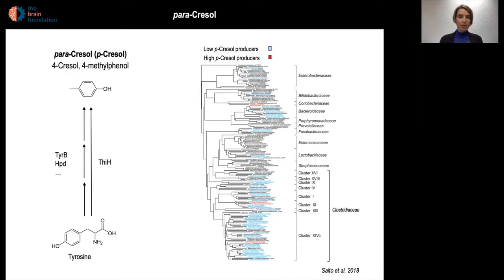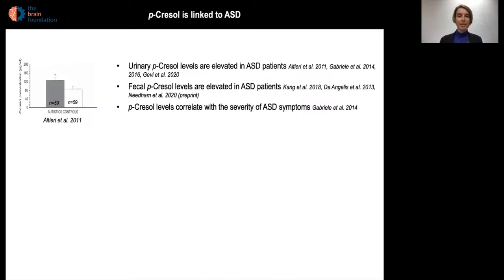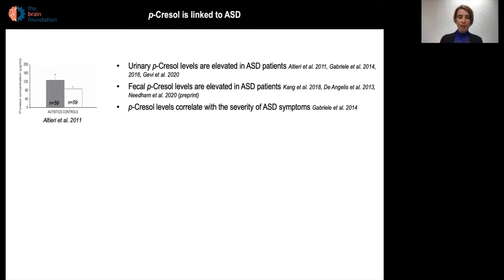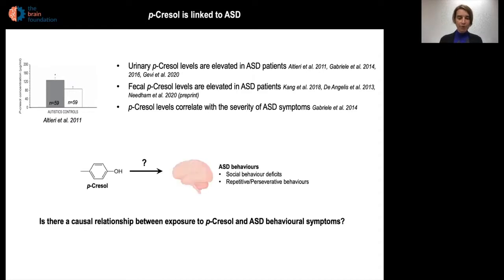We are interested in paracresol because it has been linked in the literature to ASD. Several papers have shown that urinary levels of p-cresol are elevated in ASD patients, as well as their fecal levels, and one study has shown that paracresol levels correlated with the severity of ASD symptoms. However, none of these publications really assessed the causality between paracresol exposure and the induction of abnormal behaviors. So this is the question we asked: is there a causal relationship between exposure to p-cresol and ASD behavioral symptoms?